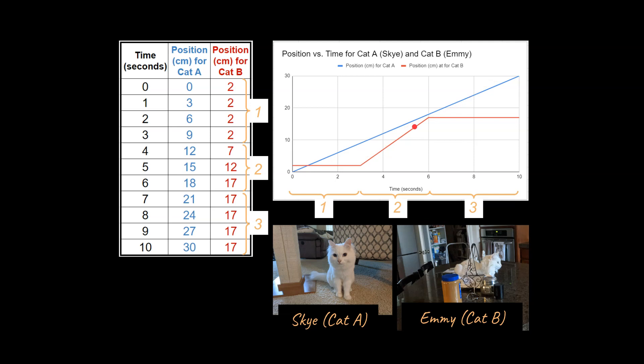So what do you think is the relationship here between the slope of these graphs and the velocity? One way to approach this problem is to think, well, what is Emmy's velocity during the third section and during the first section here, if she just stays at a constant 17 or a constant 2 centimeter mark? Well, her speed or her velocity, either way, is going to be zero during those sections. She's simply not moving during those times.